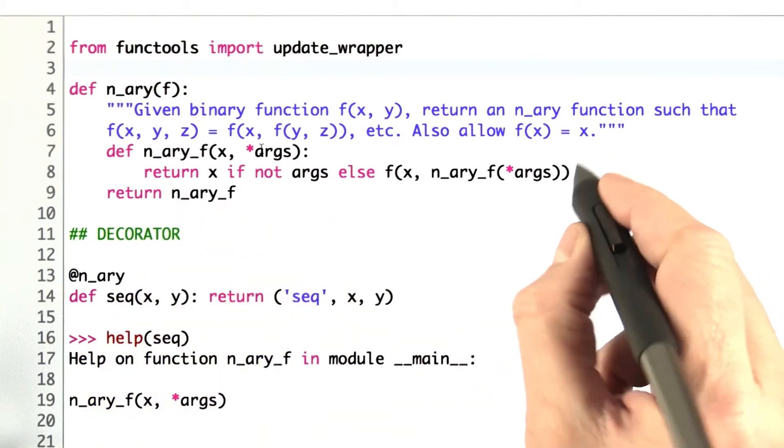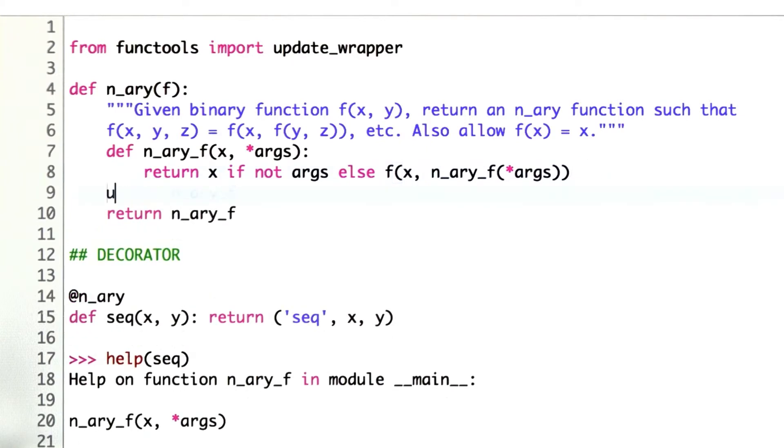Once I've defined the n_ary function, I can update the wrapper of the n_ary function, the thing I'm returning. This will be the old sequence, which has a sequence name, a list of arguments, maybe some documentation string. This will be the function we're returning. We're copying over everything from f into n_ary_f.